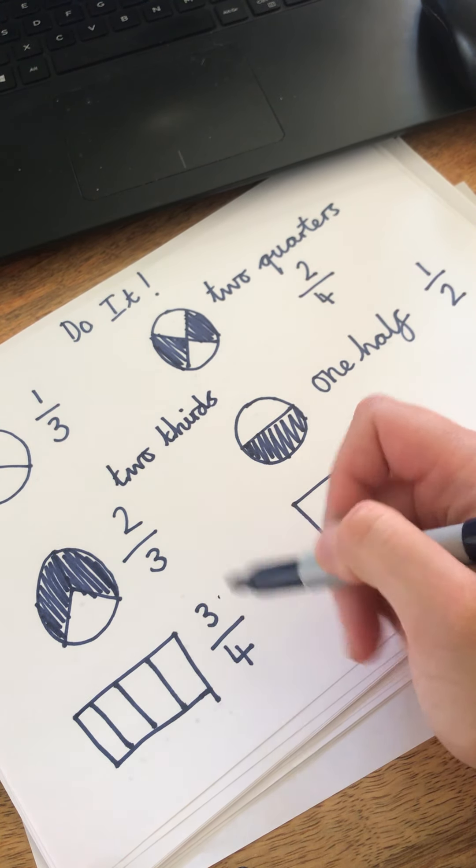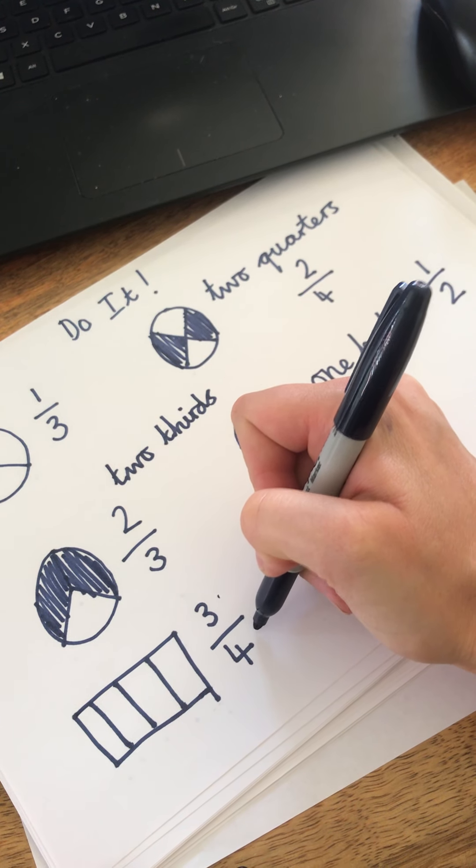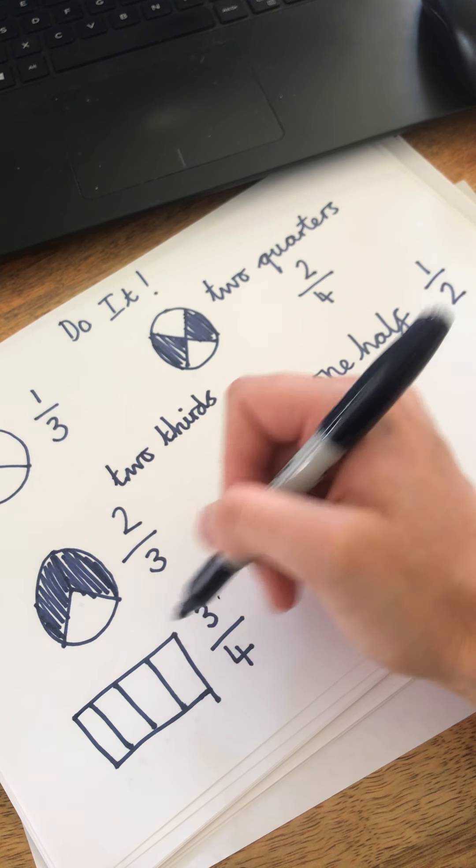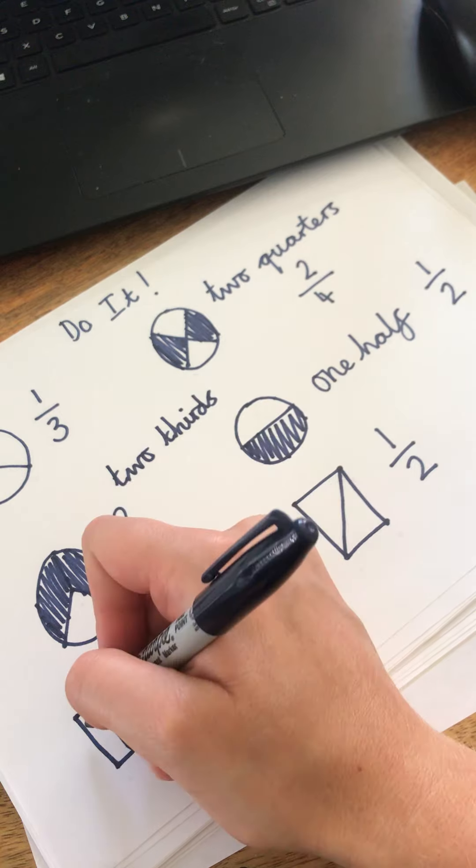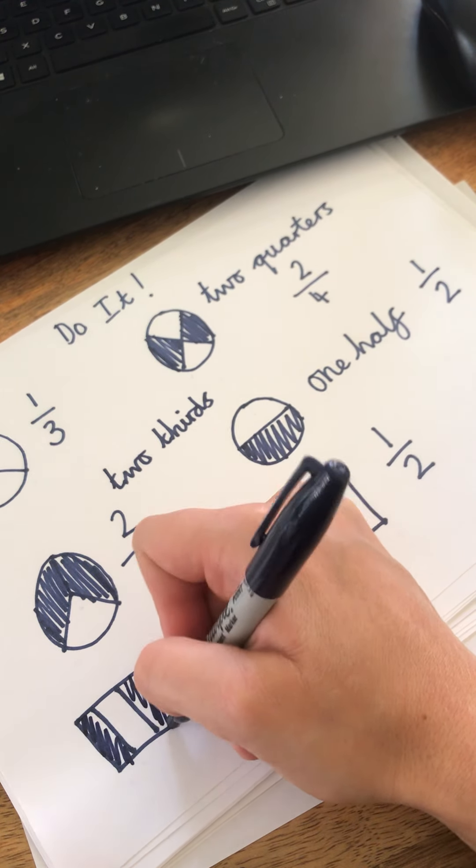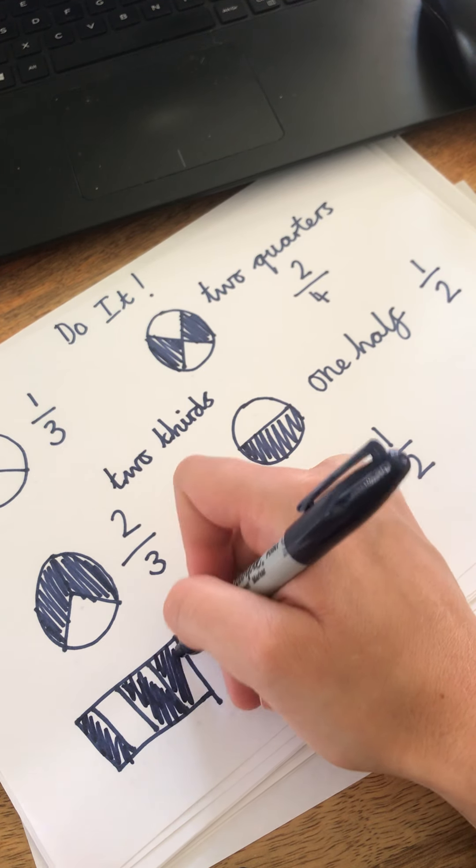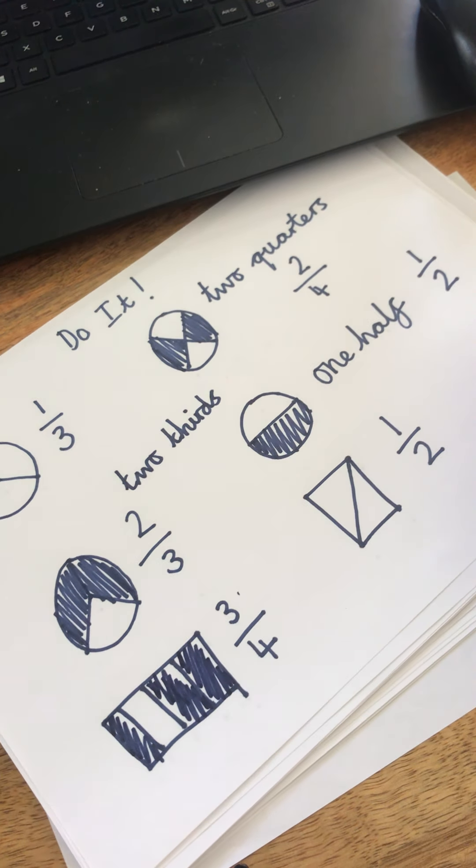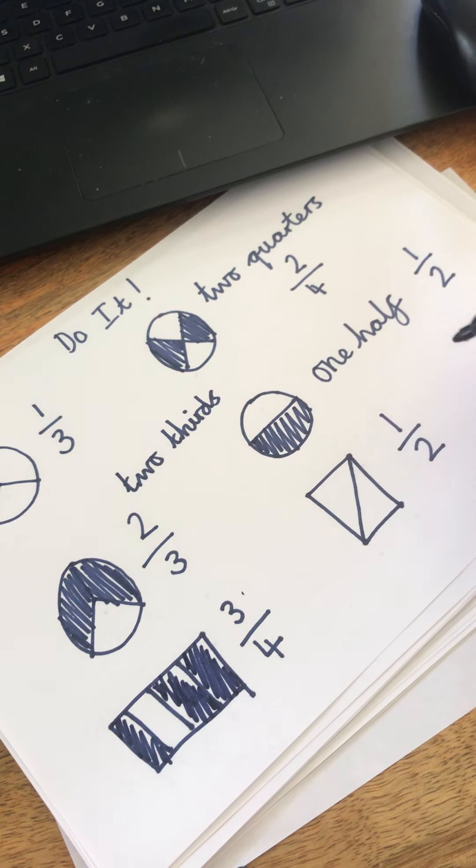So this time it's asking me to do three quarters. So I know that I've got four parts that make the whole. And I need to colour in three of those. So one. It doesn't matter which three you colour in. Two. Three. Okay. And then if you want to, you could write the fraction out.